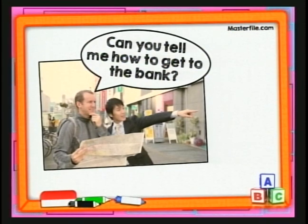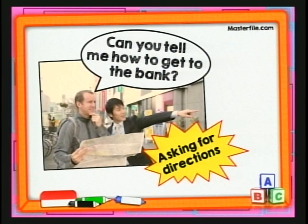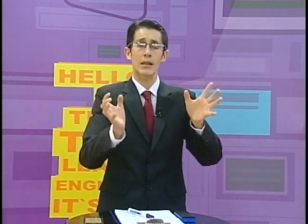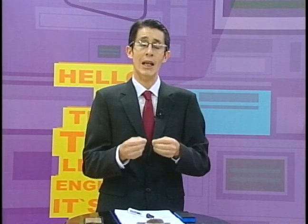¿Qué quiere decir esto? 'Can you tell me how to get to the bank' — puedes decirme cómo llegar al banco. Esto es asking for directions — el señor que está ahí está preguntando la dirección del banco. Ahora, el otro señor le va a dar las direcciones — le va a decir suba, llegue a la esquina, gire, etcétera. Vamos a hacer el mismo ejercicio: quiero que me ayuden a poner las palabras en orden para darle la dirección.